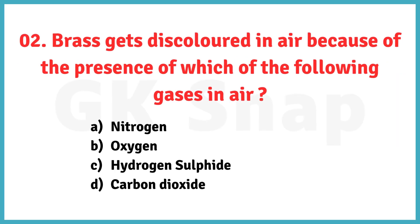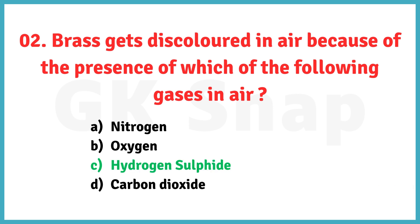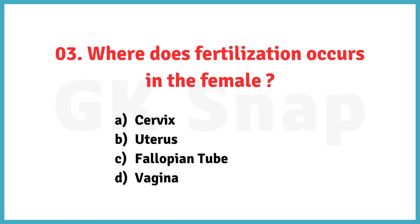Brass gets discolored in air because of the presence of which of the following gases in air? Correct answer is option C. Hydrogen sulfide.